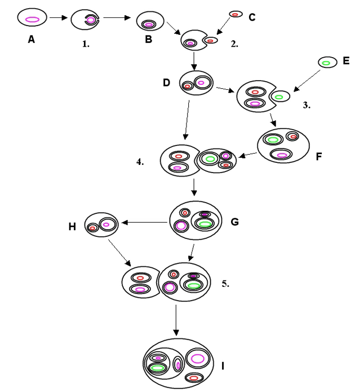The sea slug Elysia chlorotica lives in endosymbiotic relationship with the algae Vaucheria litorea, and the jellyfish Mastigias have a similar relationship with an algae.